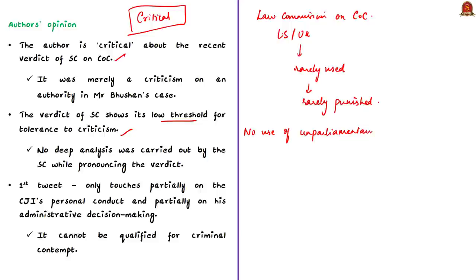The author argues that the first tweet about the Chief Justice of India riding a bike does not undermine the court's dignity, does not undermine the authority, and does not interfere with the administration of justice. It only touches partially on the Chief Justice's personal conduct and partially on his administrative decision-making. So the author tells that it cannot be qualified for criminal contempt.